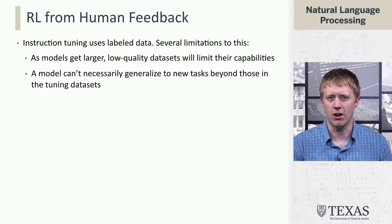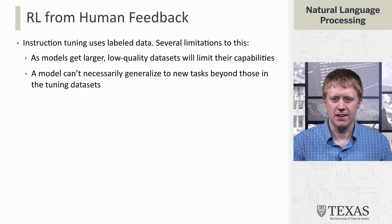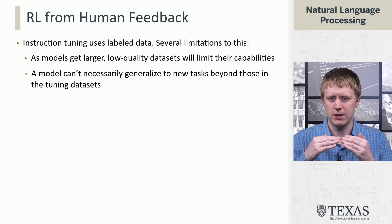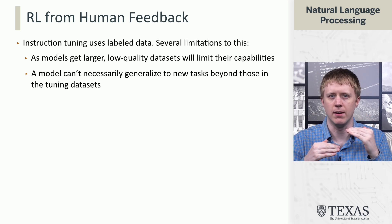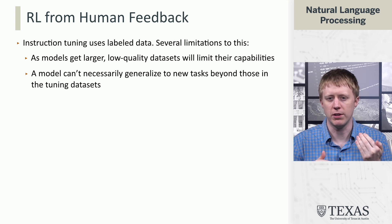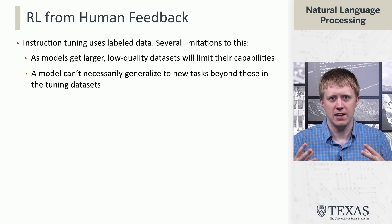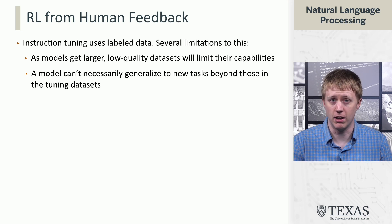Instruction tuning uses labeled data, and RL from human feedback will use human feedback in a different way. Some of the limitations of instruction tuning are that if the datasets that you're tuning on aren't very good, your model won't be able to go past what you see in your labeled data. It's also not clear that it's going to enable a model to generalize to new tasks beyond what's in these tuning datasets.